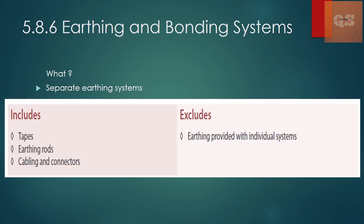Section 5.8.6 is Earthing and Bonding — a separate dedicated section covering earthing tapes, earthing rods, earthing pits, cabling, and connectors. This excludes the earthing provided with individual systems, since each individual system's earthing rates are already included in their respective sections. This section covers the external earthing rods and pits where all earthing systems are connected and grounded into the soil.